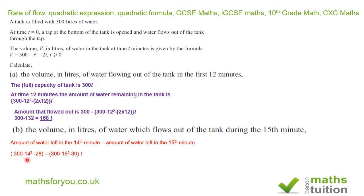So what you then do is you apply the formula twice, once for the 14th minute, again for the 15th minute, and the difference will give you the amount of water that flows out of the tank in the 15th minute. We get the answer of 31 liters.